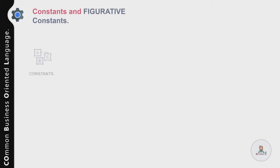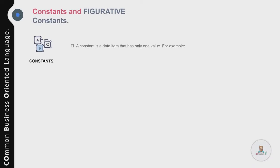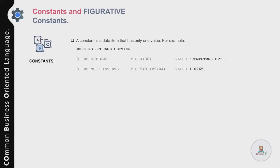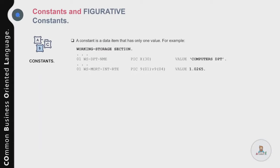Now let's talk about constants and figurative constants in COBOL and understand the basic difference between these two categories. A constant is a data item that has only one value throughout the execution of the program. In the example, two variables are defined in the Working Storage Section and treated as constants: DEPARTMENT-NAME initialized to 'COMPUTERS DEPARTMENT' and MORTGAGE-INTEREST-RATE initialized to 1.0265.